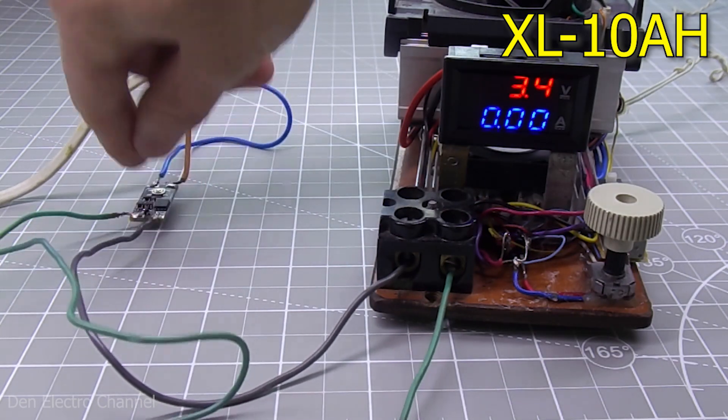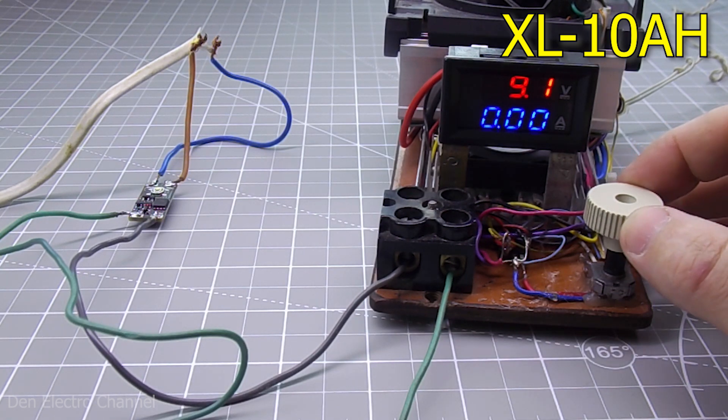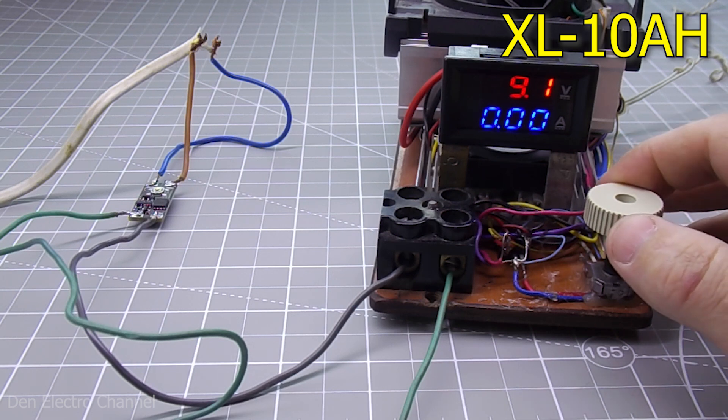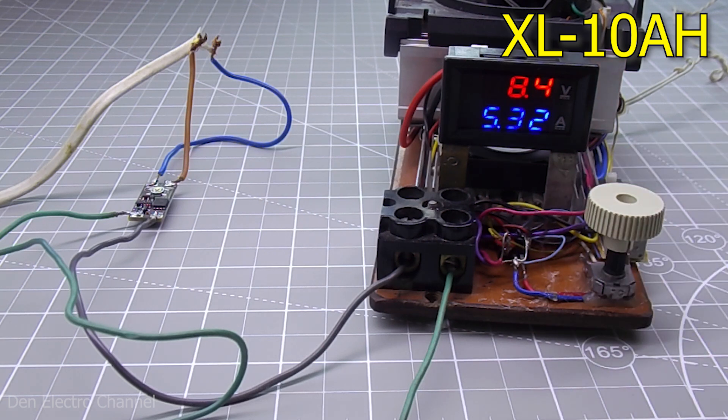Now I'll try to pass a large current through this module and see how it heats up. I'll start with a voltage of 9 volts. I will load it with an electronic load. The current is more than 5 amperes, and the voltage has dropped a little. The voltage drop did not occur on the module, but on the power supply.